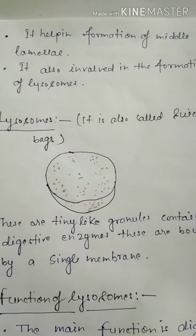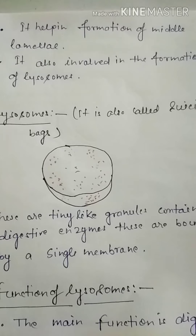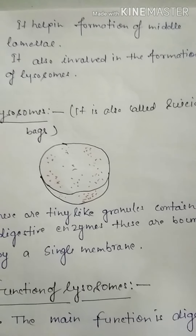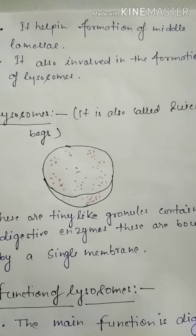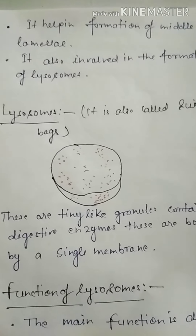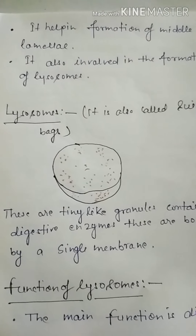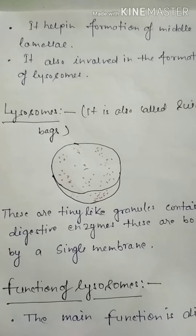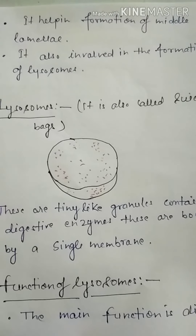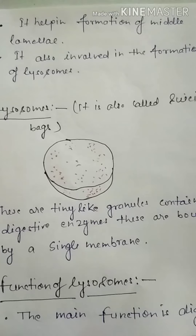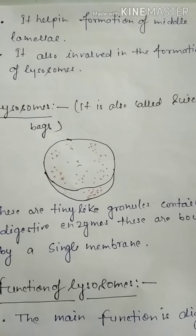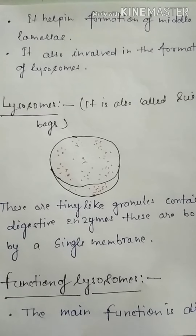It also helps in the formation of the middle lamella. We see the two cell walls attached by a lamella, so the lamella is formed by the Golgi apparatus. Next, it also involves in the formation of lysosomes — Golgi apparatus is involved in lysosome formation.